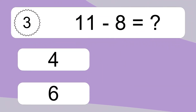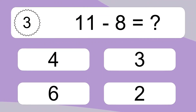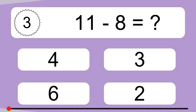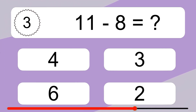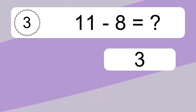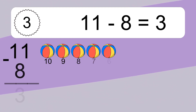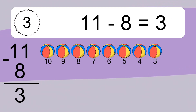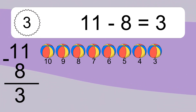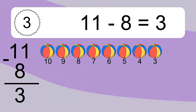11 minus 8 equals what? 11 minus 8 equals 3. Let's count it. 10, 9, 8, 7, 6, 5, 4, 3.